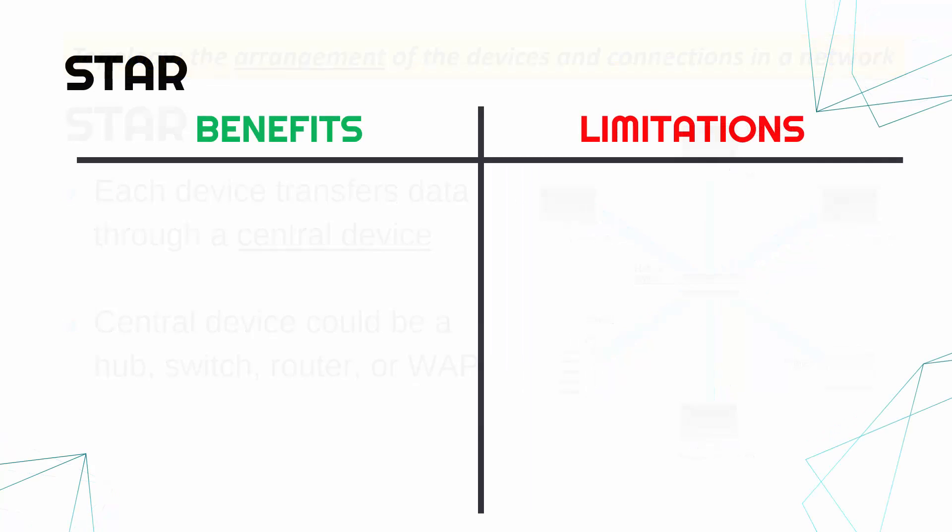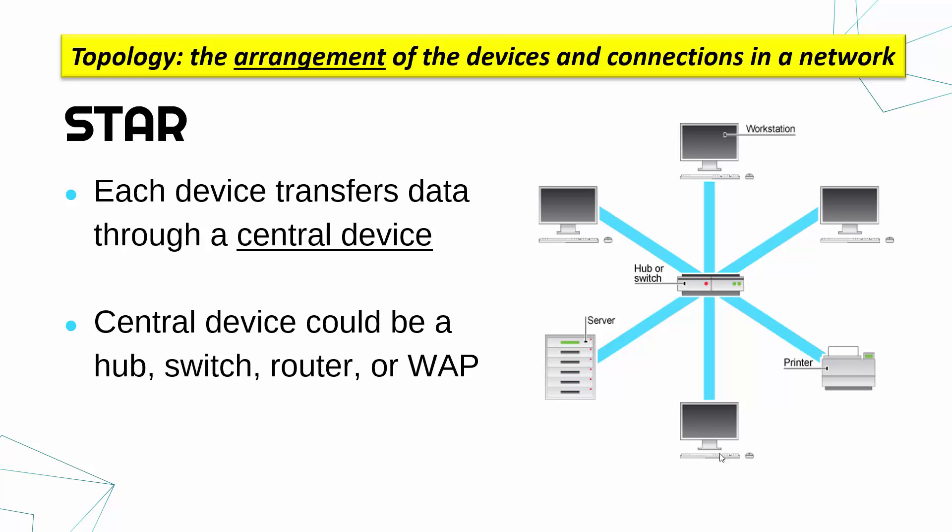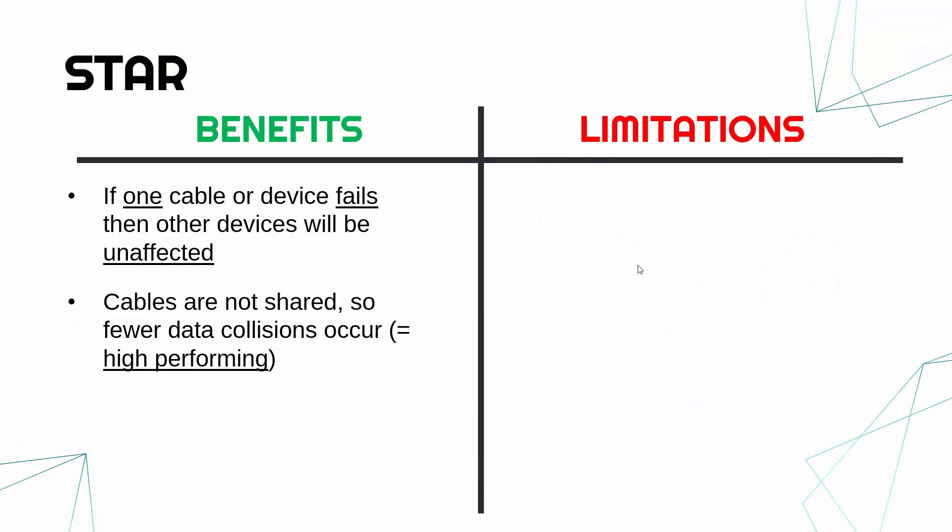Okay, the next step is to evaluate these topologies. First, with a star topology, if one cable or one outer device fails, it breaks, it goes down, then other devices will be unaffected. If we can picture this bottom computer breaking or the wire going to that bottom computer breaking, it won't affect the rest of your network. Also, because cables are not being shared, there is less chance of data collisions.